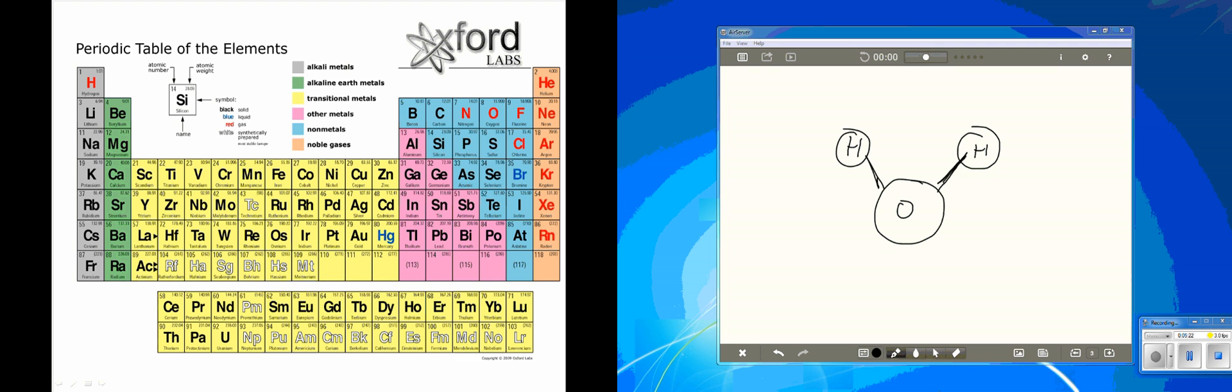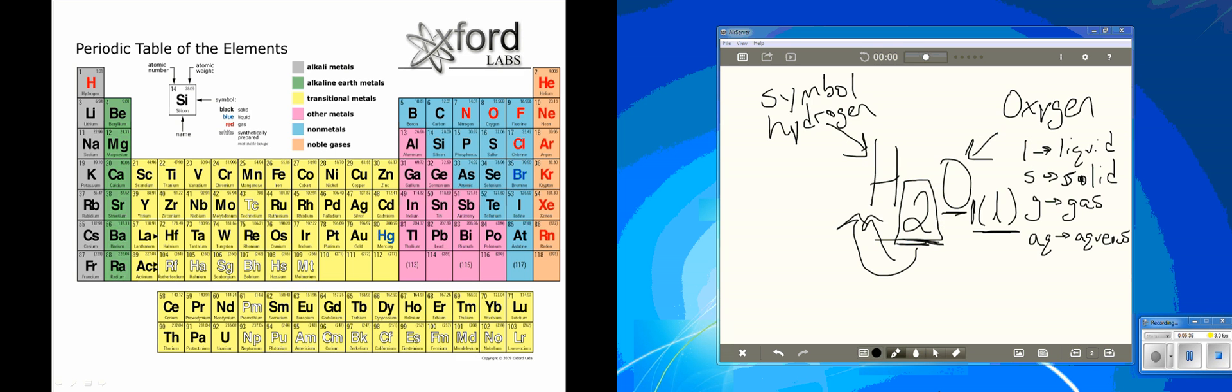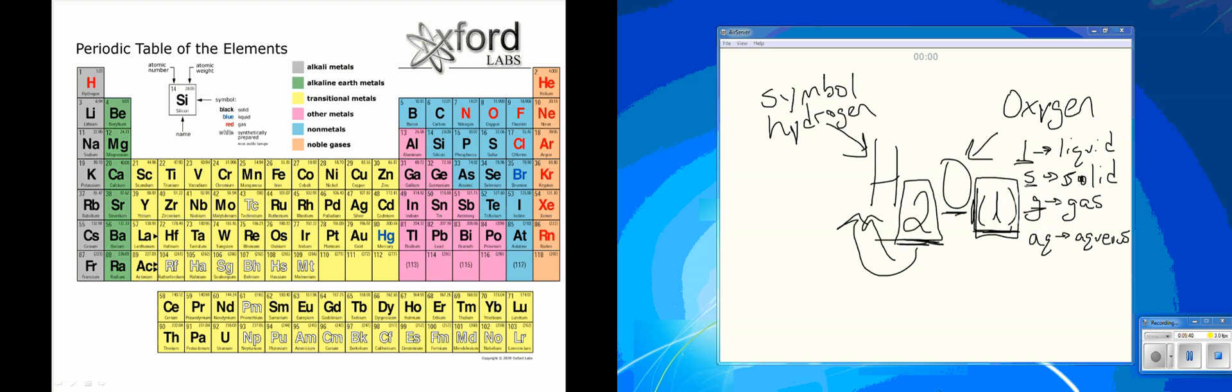This chemical formula tells you that for every atom of oxygen found in water, there are two atoms of hydrogen. It also tells you that water is in liquid form at room temperature. Whatever state description is given—liquid, solid, or gas—that's what its state is at room temperature.